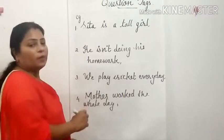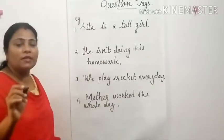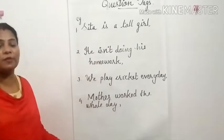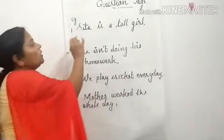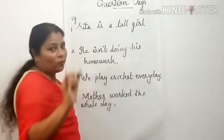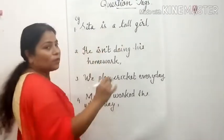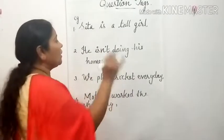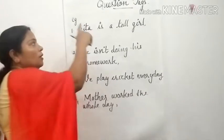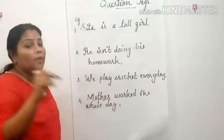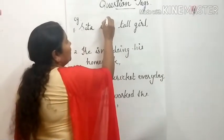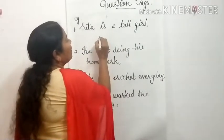So first example: 'Sita is a tall girl.' First, we should know whether our given sentence is a positive statement or a negative statement. This is a positive statement because there is no 'not' in it. So a positive statement means the question tag will be a negative one, and a negative statement means the question tag will be a positive one. Remember that.